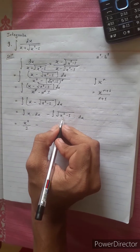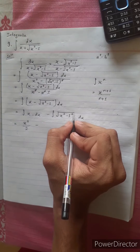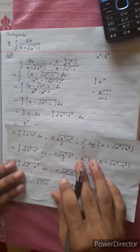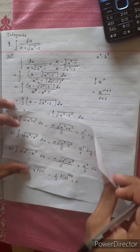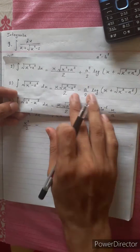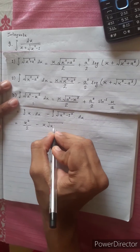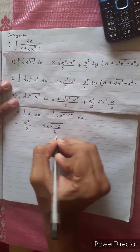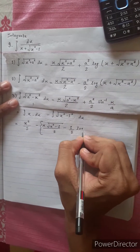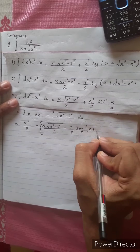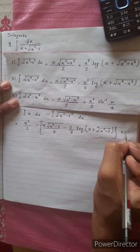For the second part, we use the formula for under root x squared minus a squared. Using formula number 2: x under root x squared minus 1 divided by 2, minus a squared which is 1, times 1 by 2 log of x plus under root x squared minus 1, plus c, minus c.